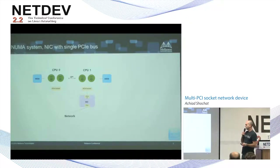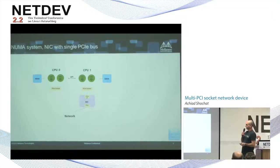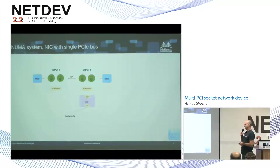The other use case is in NUMA systems — non-uniform memory access systems. In these servers, you have multiple CPUs, each one with its own cores. And each CPU in the system has its own local memory attached to it, but each CPU can also access memory attached to other CPUs, which is remote for that CPU.